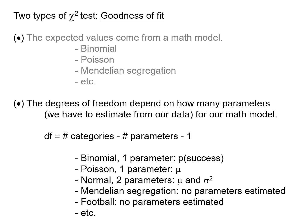In a goodness of fit test, the expected values come from our mathematical model, the observed values come from our experiment, and the degrees of freedom depend on how many parameters we had to estimate from our data for the model. Degrees of freedom starts as the number of categories, minus the number of parameters estimated from the data, minus one. For a binomial model there is one parameter — the overall probability of success. For a Poisson distribution there is one parameter — the mean — since mean and variance are equal.